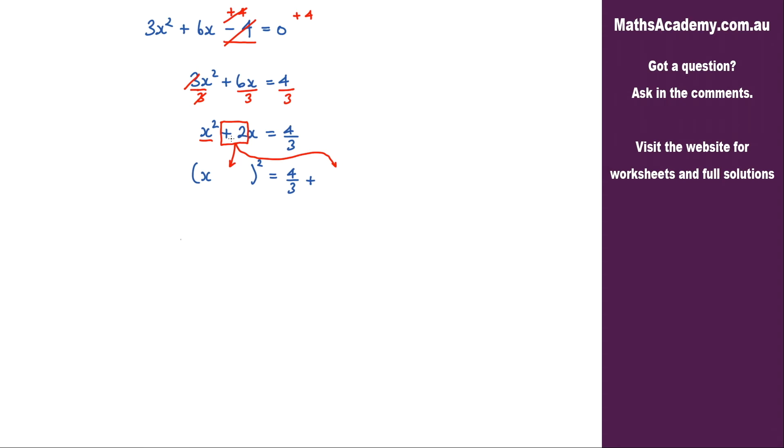What we do with this term well it's positive so I know I've got a plus here. We take the coefficient 2 and we divide by 2 so that gives me 1. And over on the right hand side again it's going to be 1 but it's going to be 1 squared which is still 1.